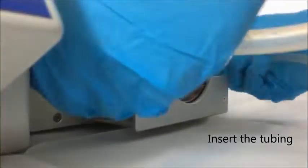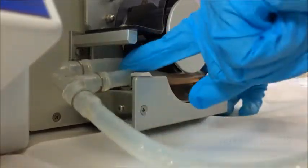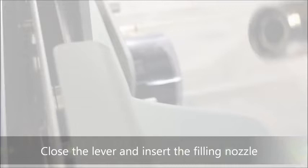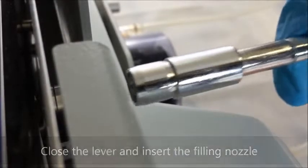Simply insert the pre-sterilized tubing set into the double-headed pump. Close the pump lever to initiate the pump. Insert the sterile filling nozzle into the chamber.